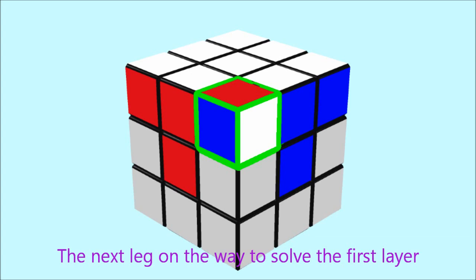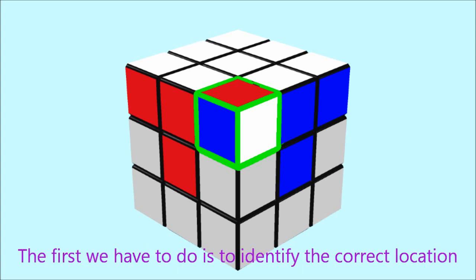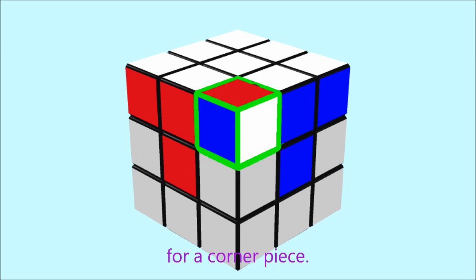The next leg on the way to solve the first layer is to fill in the correct corner pieces. The first we have to do is to identify the correct location for a corner piece.